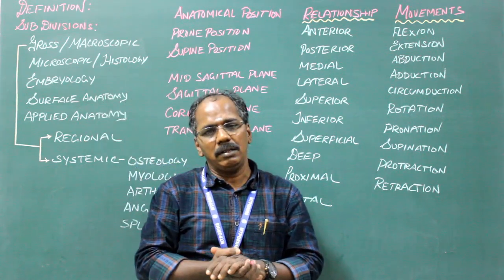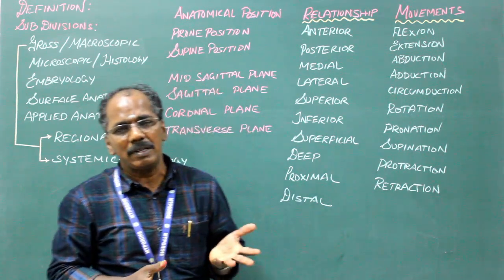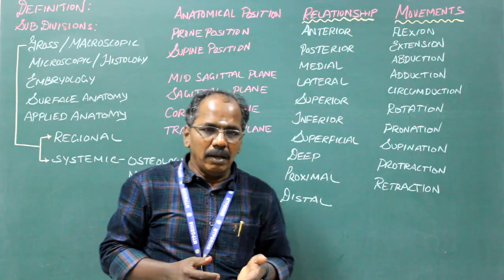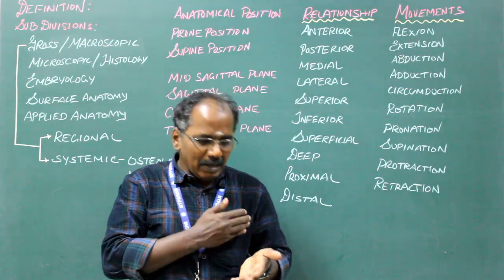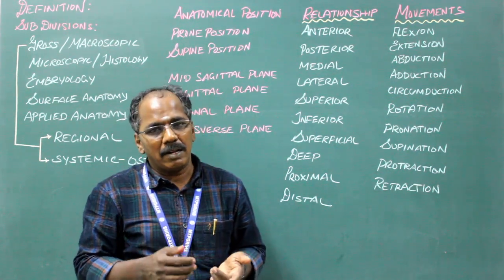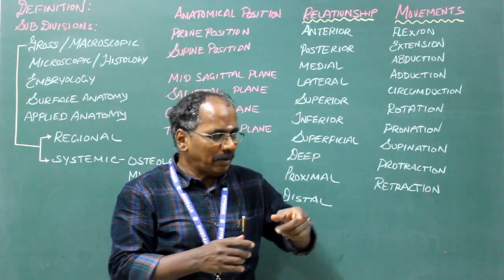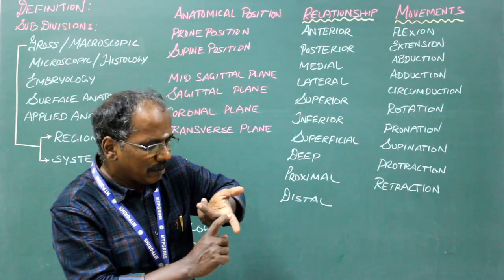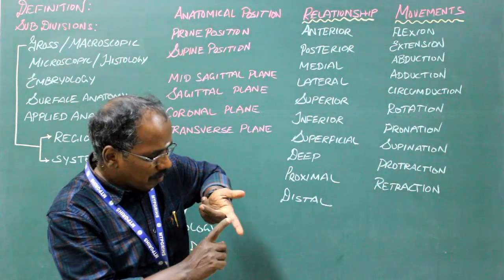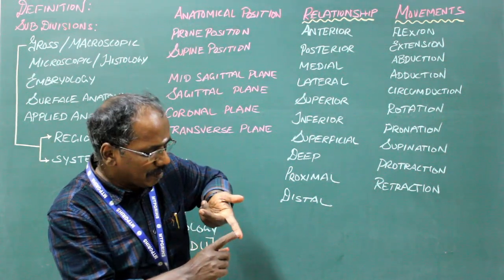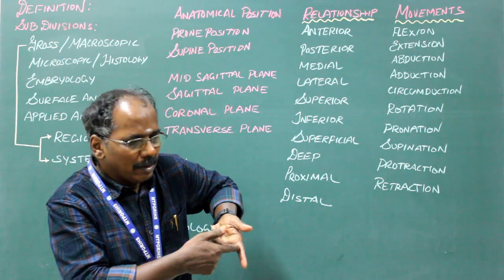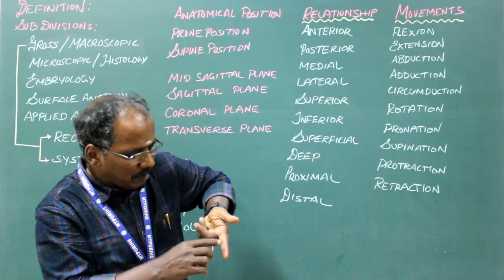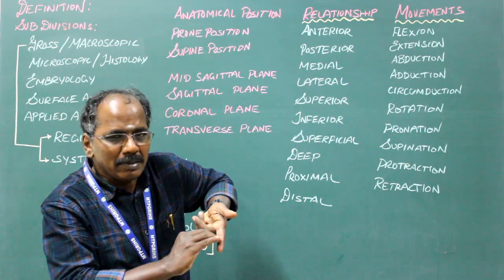Proximal and distal — these terms are especially used in the case of limbs. Proximal means towards the trunk; distal means away from the trunk. For example, in the digits, you have three phalanges: proximal phalanx, middle phalanx, and distal phalanx. Proximal means which is present above; distal means which is present below.